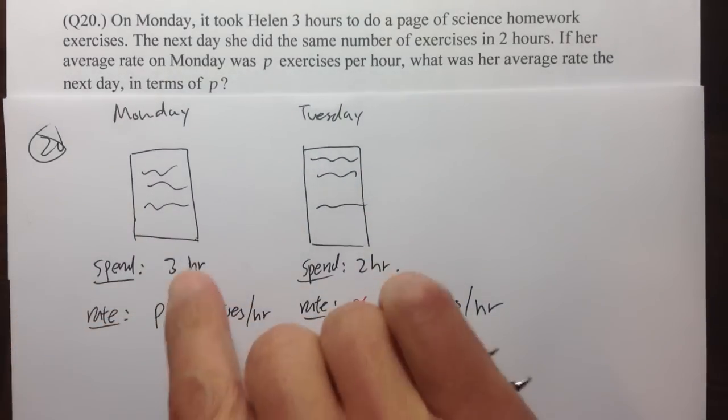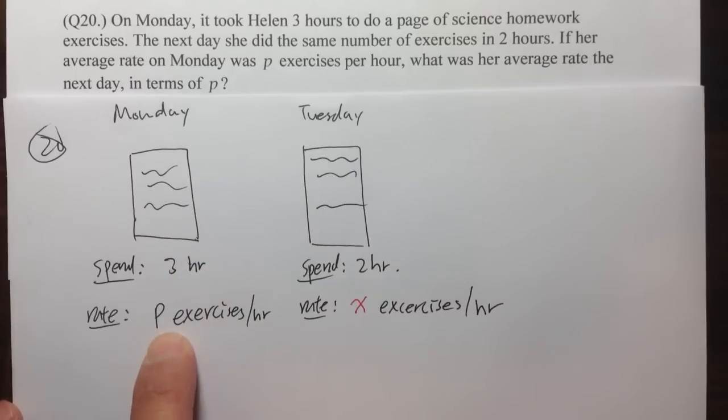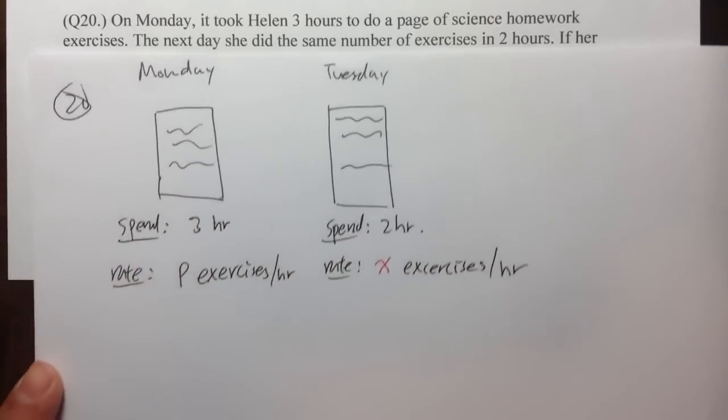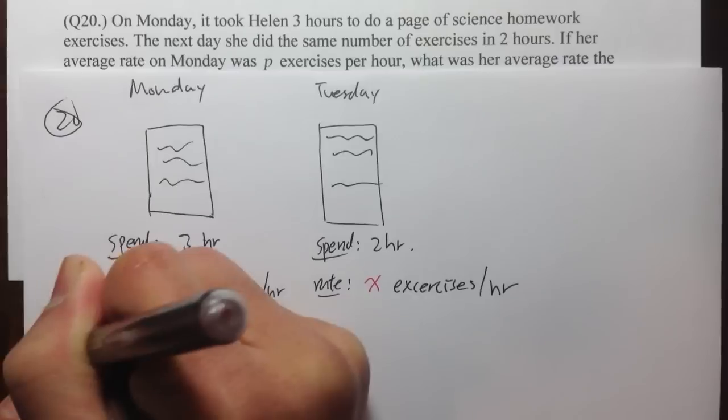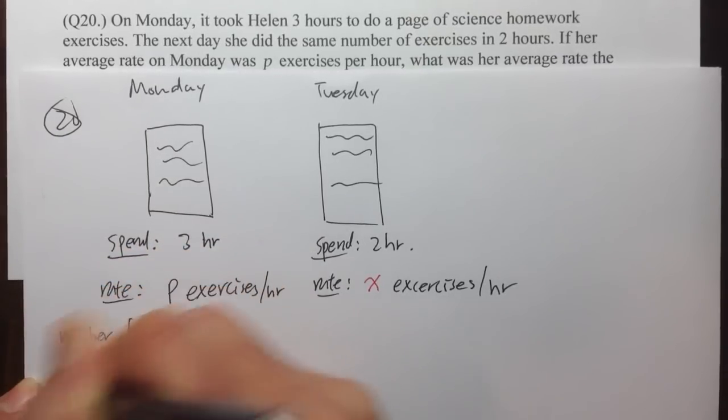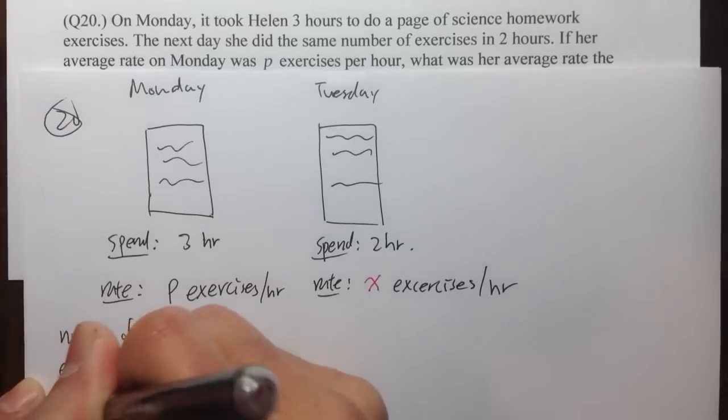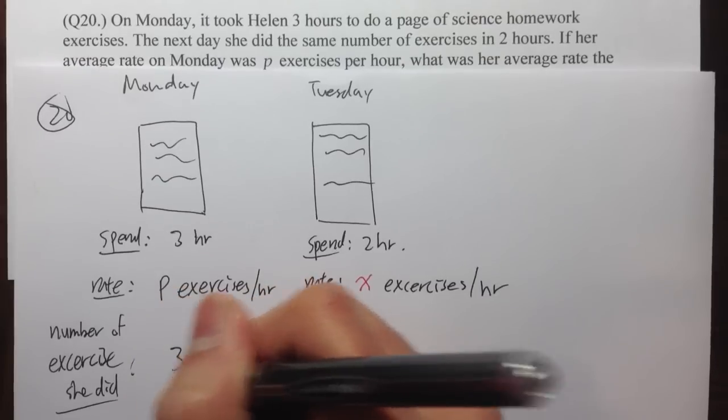So the idea is that we will multiply the time, three hours times the rate, to get the number of exercises that she did. So let me write this down. Number of exercises she did. Well, in this case, it's just three times P.